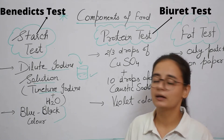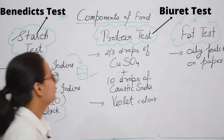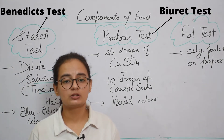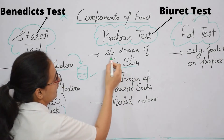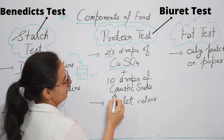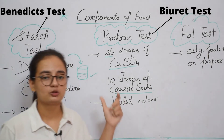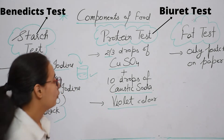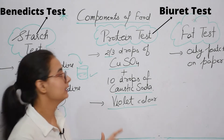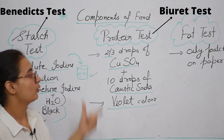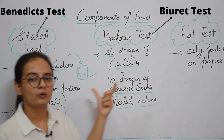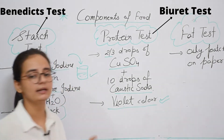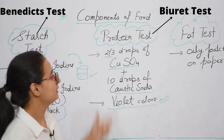If the color changes, it means that it is having starch. Next we go to the protein test. For the protein test, you have to remember the result: if the violet color appears when caustic soda and copper sulphate are added, it means the food is having protein.